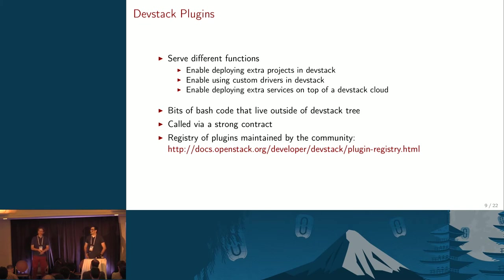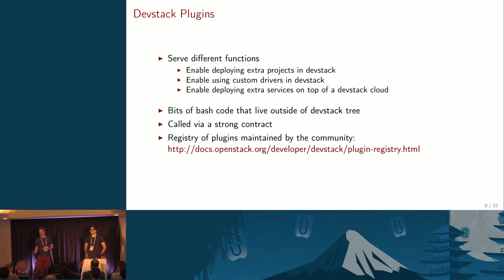There is a further use case: deploying some service which relies on the cloud that was deployed by DevStack — something that runs on top of the cloud. One example for which we have a plug-in is NodePool. NodePool is a tool used by OpenStack Infra to allocate test nodes from a cloud. To have a development environment for NodePool, you need to run NodePool and connect it to some cloud. With a DevStack plug-in, you can set up a DevStack with a running cloud and a NodePool instance configured to work with the cloud that was deployed there.